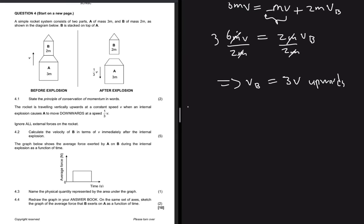For 4.3, the graph below shows the average force exerted by A on B during the internal explosion as a function of time. On the y-axis we have average force, on the x-axis we have time. The question asks: name the physical quantity represented by the area under the graph.